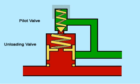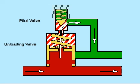When oil pressure rises to the relief valve setting, the pilot valve opens and dumps oil from the unloading valve spring chamber to the return line. Since more oil can flow past the pilot valve than through the unloading valve orifice, the pressure drops in the unloading valve spring chamber.